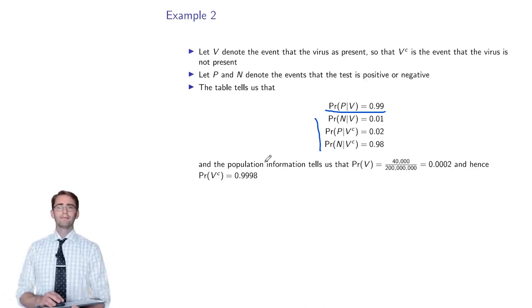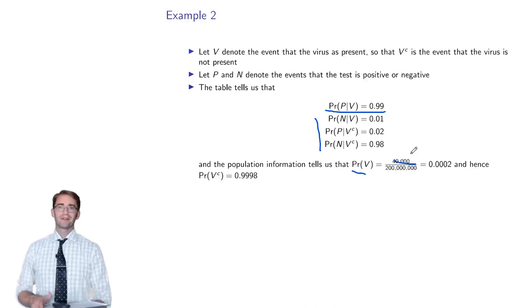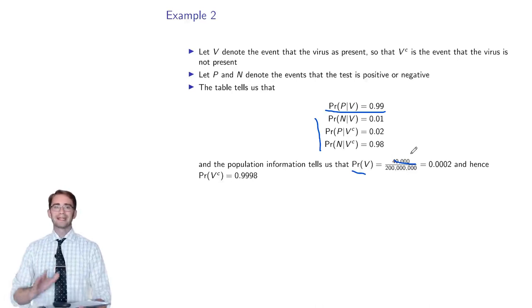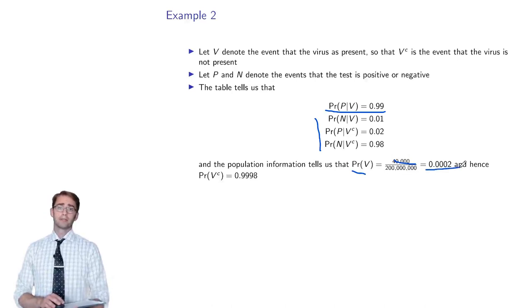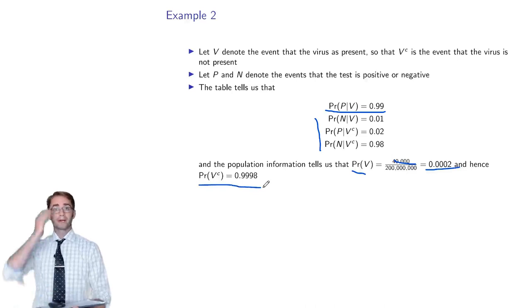What else do we know? The probability of having the virus is 40,000 divided by 200 million, which is 0.0002. That came from the initial statement that 40,000 people have this virus in a country of 200 million. The probability of no virus — the complement — is just one minus that, so 0.9998. With all this information, we have enough to apply Bayes' formula.